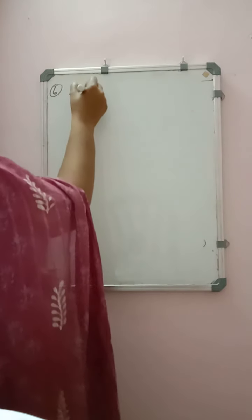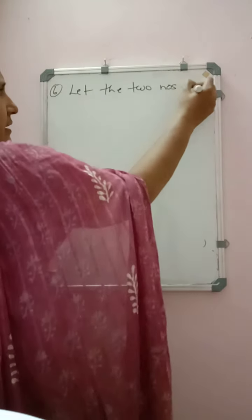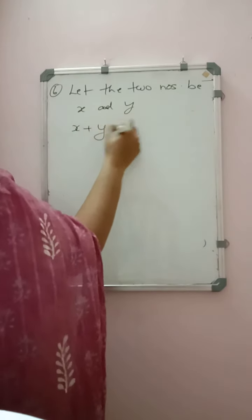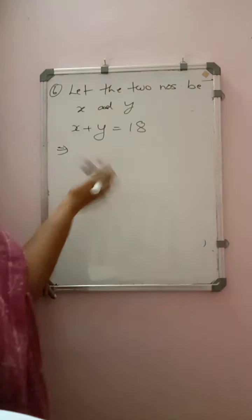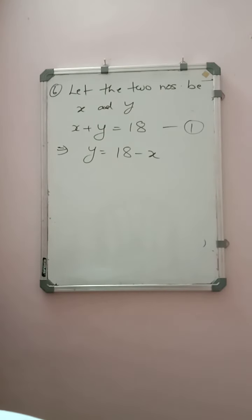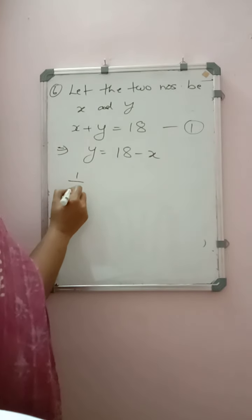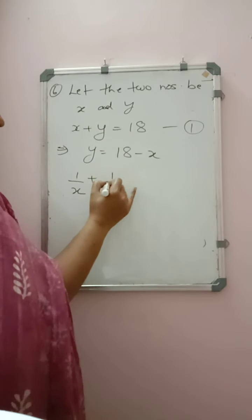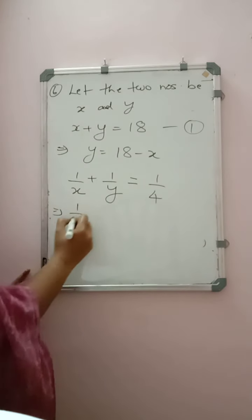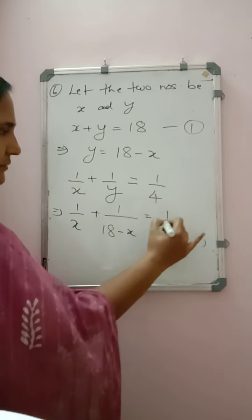Moving on to the next question: the sum of two numbers is 18. Let the two numbers be x and y. Their sum gives x + y = 18. From this, y = 18 − x. The second condition: the sum of their reciprocals is 1/4. So 1/x + 1/(18−x) = 1/4.